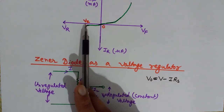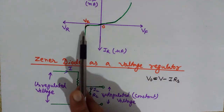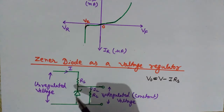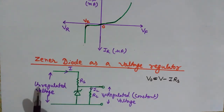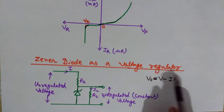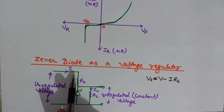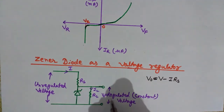If the unregulated voltage is above Vz, even with fluctuations, the zener will always operate in the breakdown condition and give a regulated constant output voltage equal to Vz. For example, if the zener rating is Vz equals 10 volts — it breaks down at 10 volts — then even if the input varies from 11 to 12 volts, the output remains constant. The output voltage V-out equals V minus I times Rs.